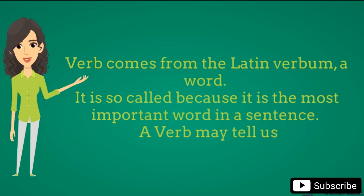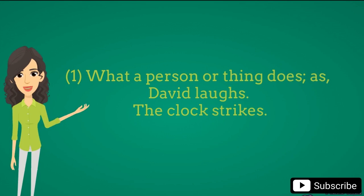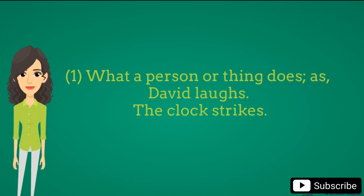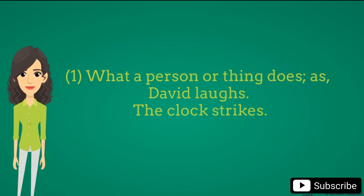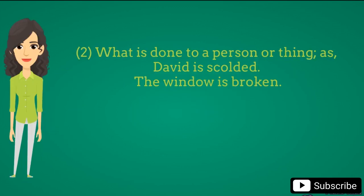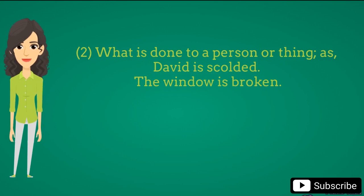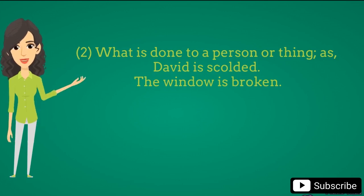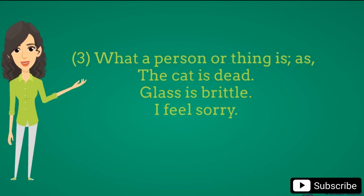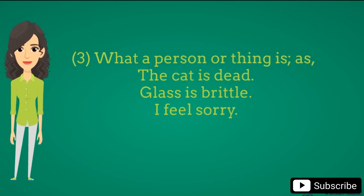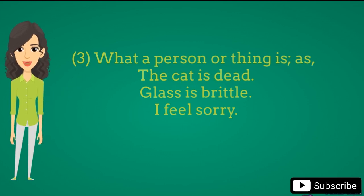A verb may tell us what a person or thing does, as: David laughs; the clock strikes. What is done to a person or thing, as: Harry is scolded; the window is broken. What a person or thing is, as: the cat is dead; glass is brittle; I feel sorry.